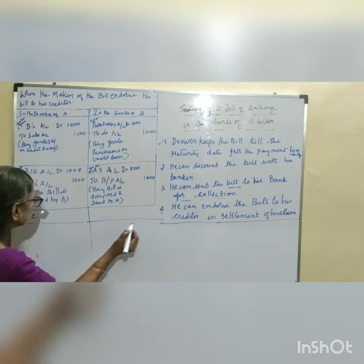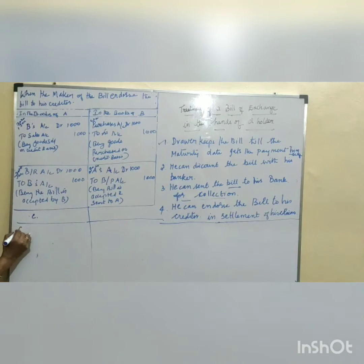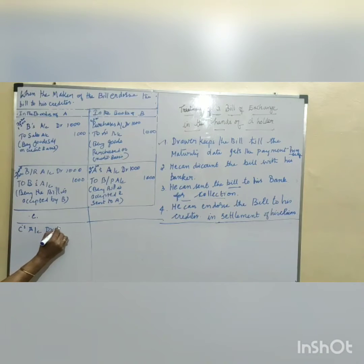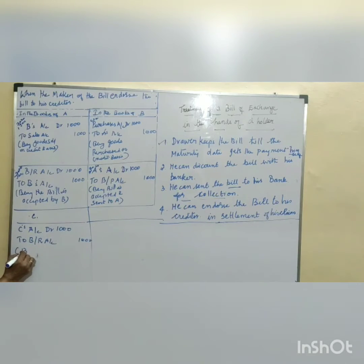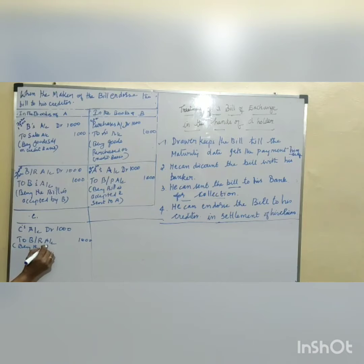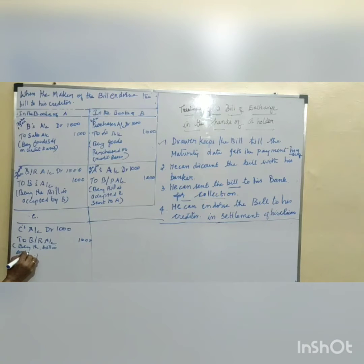The journal entries will be like this. C's account is debited 1000 rupees to bills receivable account.